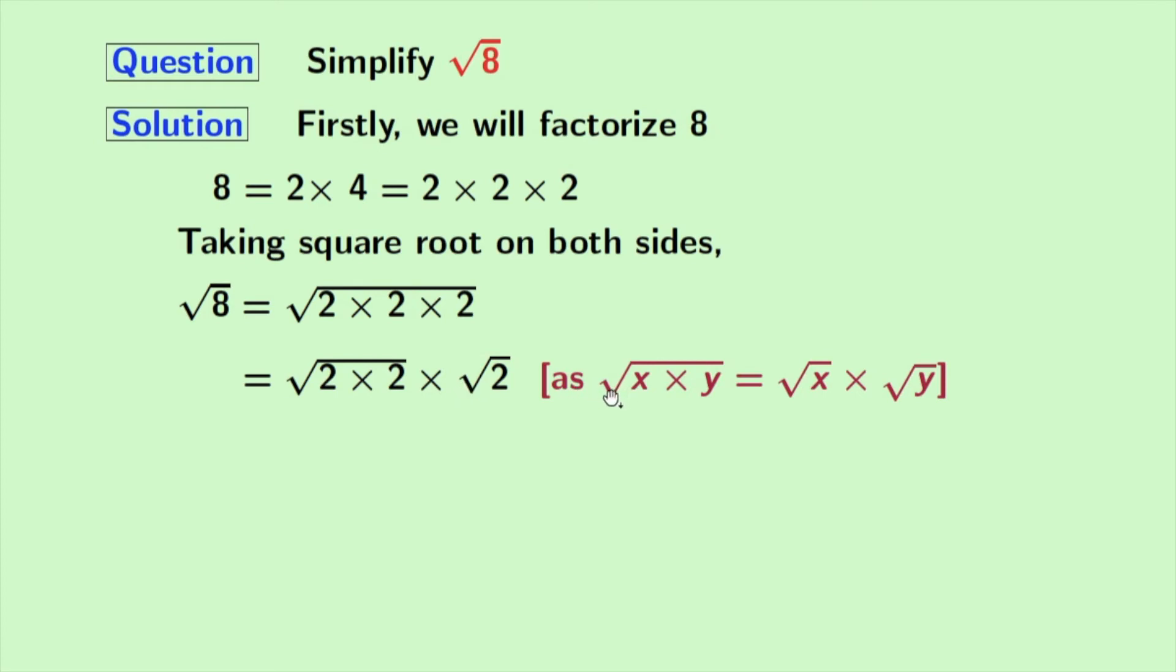The rule we used is square root of x times y is equal to square root of x times square root of y. x is equal to 2 times 2 and y is equal to 2.